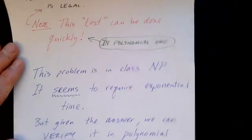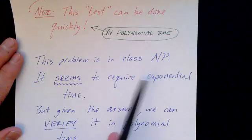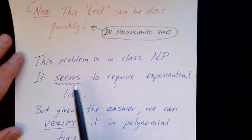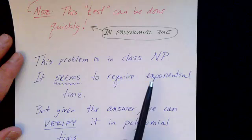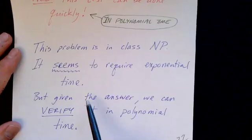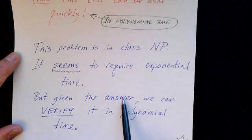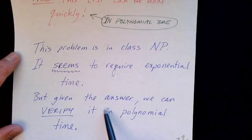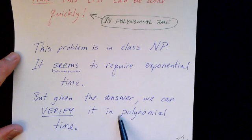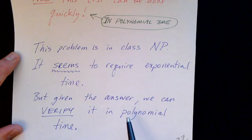So this problem is an example of a problem that's in class NP. It seems to require exponential time. But interestingly enough, for problems in this class, given an answer, in this case given a path, we can verify that it's a proper answer, that it's legal, and we can do that in polynomial time. So that's a characteristic of these problems that are in NP.